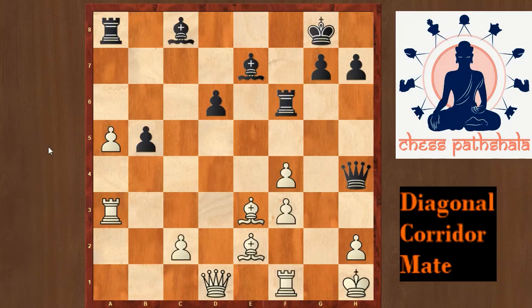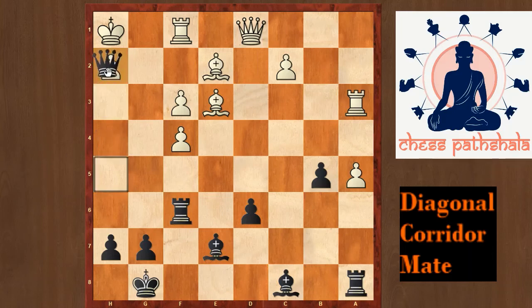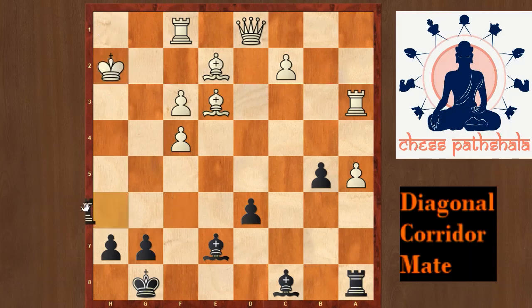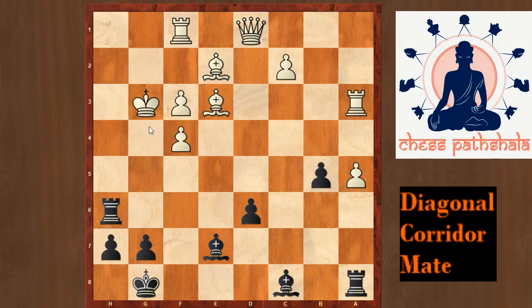It is black to play and you have to find a forced draw. You can pause the video and think. Black can play queen takes h2 check — a fantastic sacrifice. After king takes h2, we have a draw by perpetual check: rook h6 check, king g3, rook g6 check, king h2, rook h6 check, king g3.